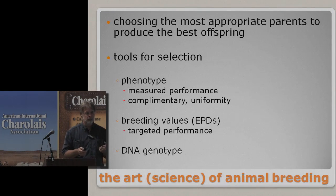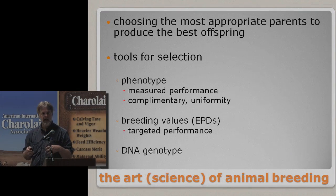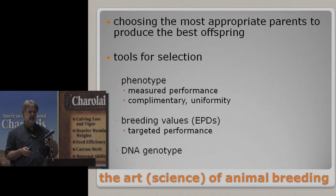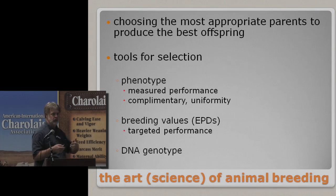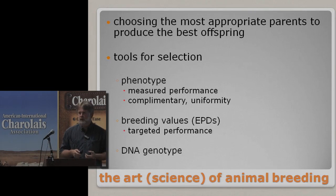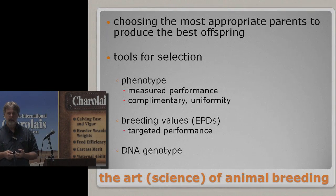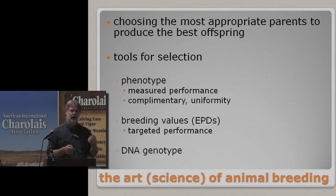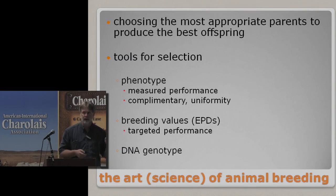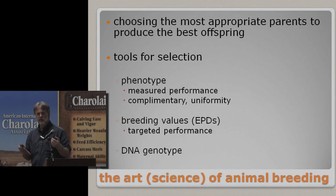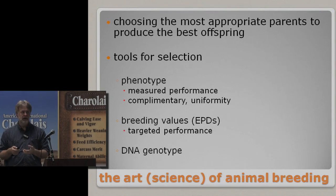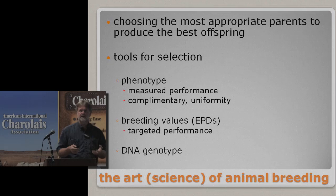The second part I want to talk about is what you try to do as a breeder — you have a goal. You're going to say, I want to increase my weaning weights, I want to increase my quality grade, I want to decrease my birth weights. With that goal in mind, what you're trying to do is pick parents to breed together to produce offspring that have increased genetic merit.